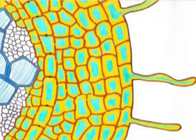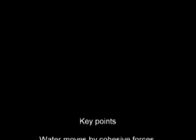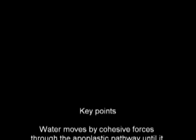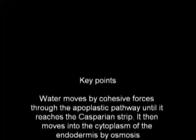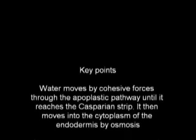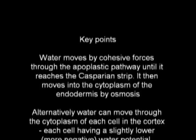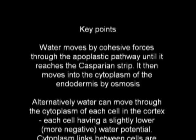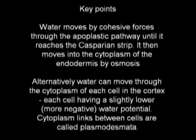So the key points of water movement are: from soil to the root hairs, from root hairs to the endodermis, and from endodermis to the xylem cells.